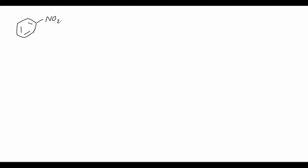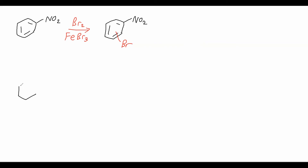Now let's move on to a different substituent. What if we look at nitrobenzene, where we have this nitro group? Remember that nitro is very electron-withdrawing and very deactivating to EAS reactions. So if we want to brominate this ring, we're going to use Br2, and we'll also need a Lewis acid because the ring is so deactivated. This gives us a substituted nitrobenzene with the nitro group in the same position. Let's draw resonance structures to determine whether ortho, meta, or para substitution will be favored.